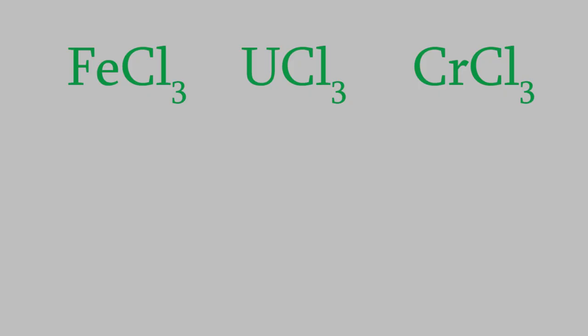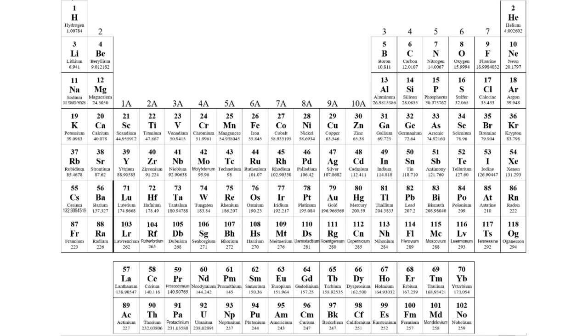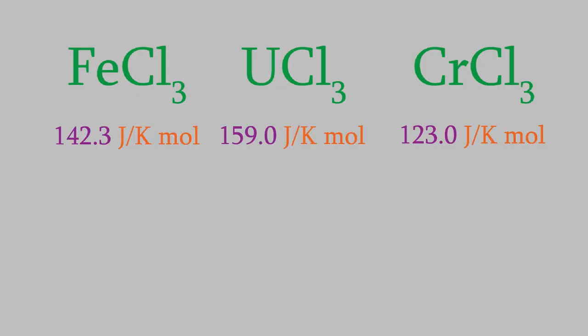Next, consider these three molecules: iron(III) chloride, uranium(III) chloride, and chromium(III) chloride. Which of these will have the highest entropy? It might seem like there will be no difference because each contains the same number of atoms. However, the central atom in each molecule has a different number of electrons. Checking the periodic table, iron has 26 electrons, uranium has 92, and chromium has 24. That means uranium contains more particles, so it should have a higher entropy. If we look up the entropy for each compound, that's exactly true — uranium chloride has the highest entropy, and chromium chloride has the lowest.